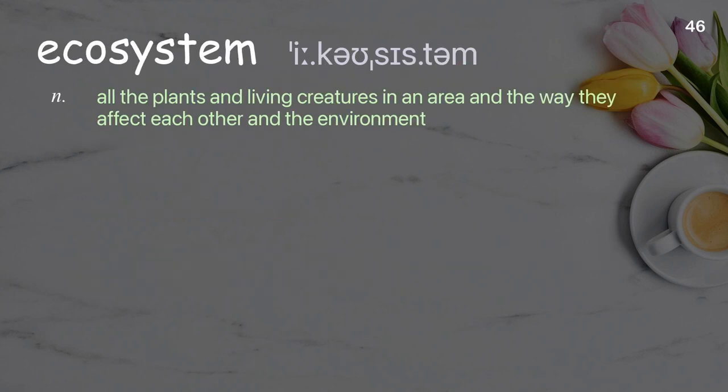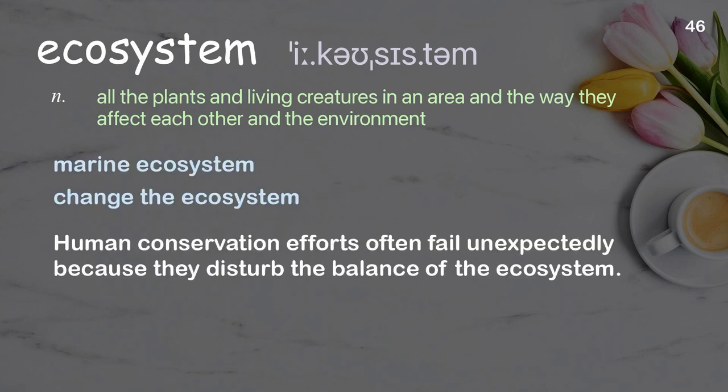Ecosystem: All the plants and living creatures in an area and the way they affect each other and the environment. Examples: Marine ecosystem, change the ecosystem. Human conservation efforts often fail unexpectedly because they disturb the balance of the ecosystem.